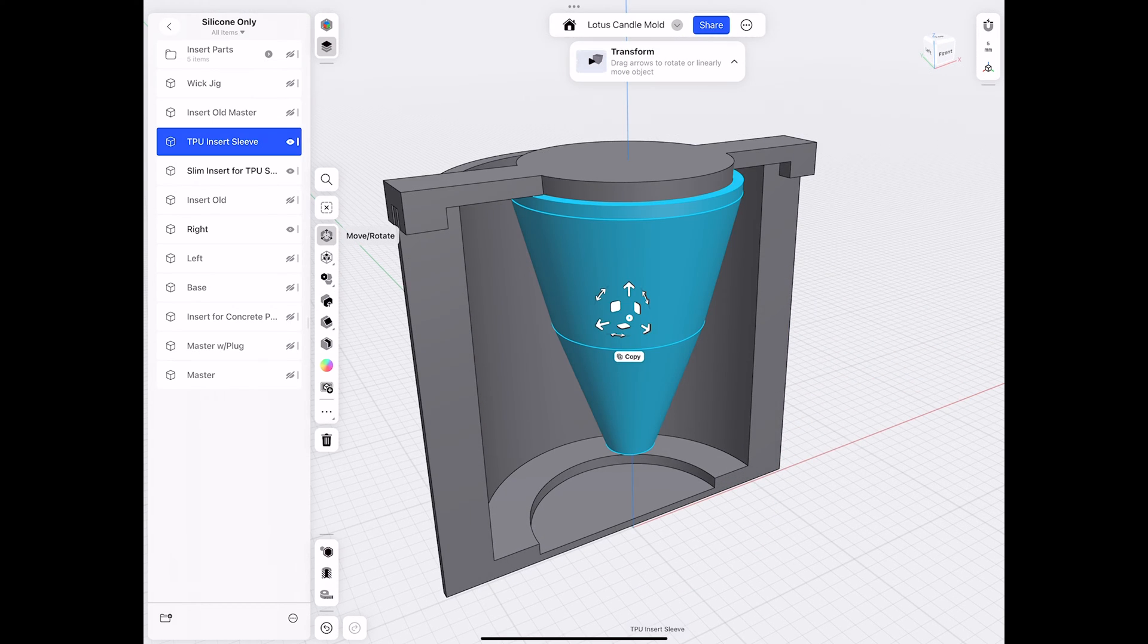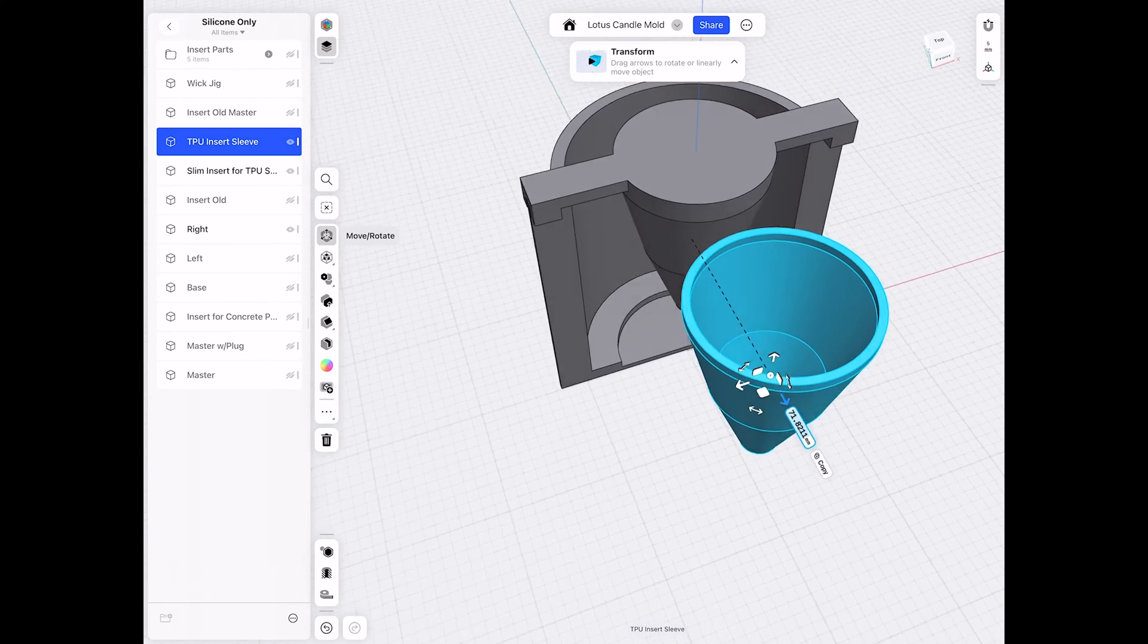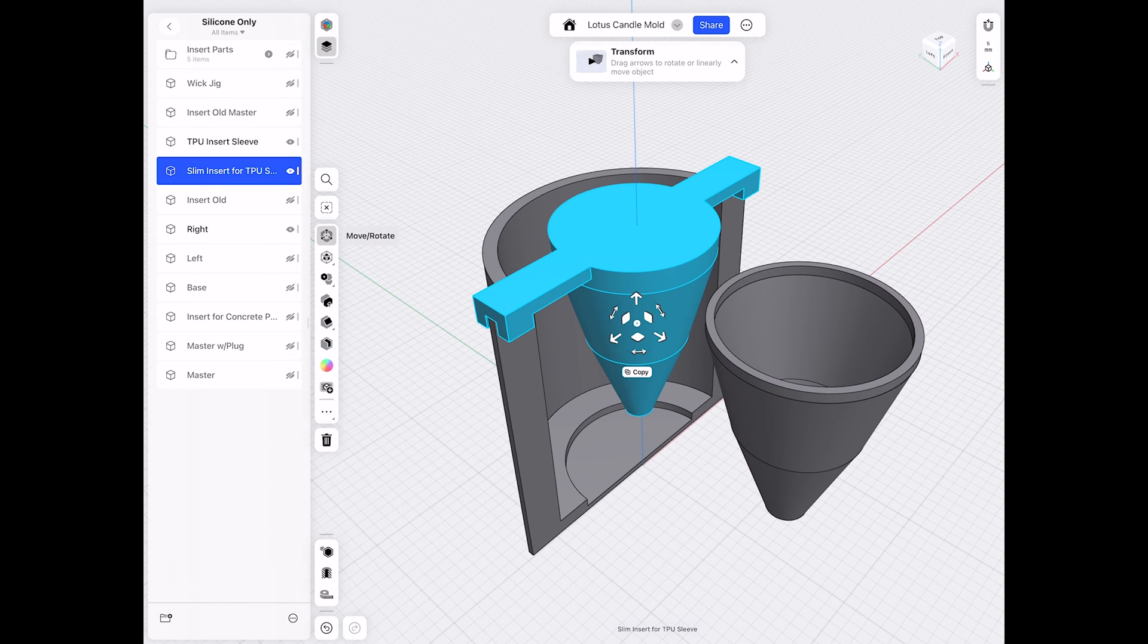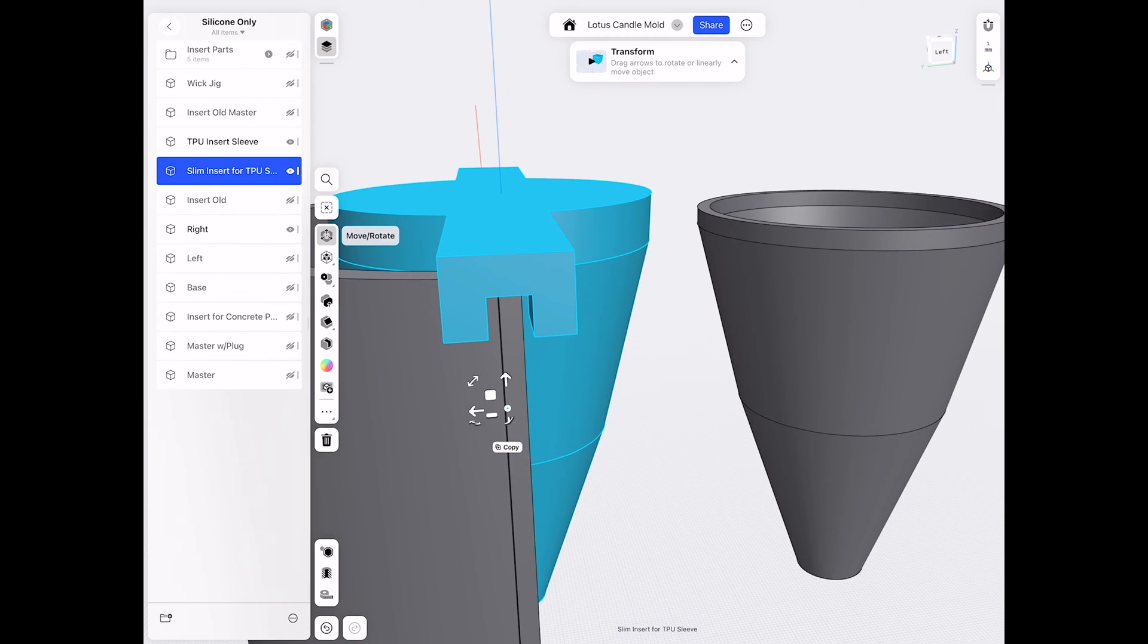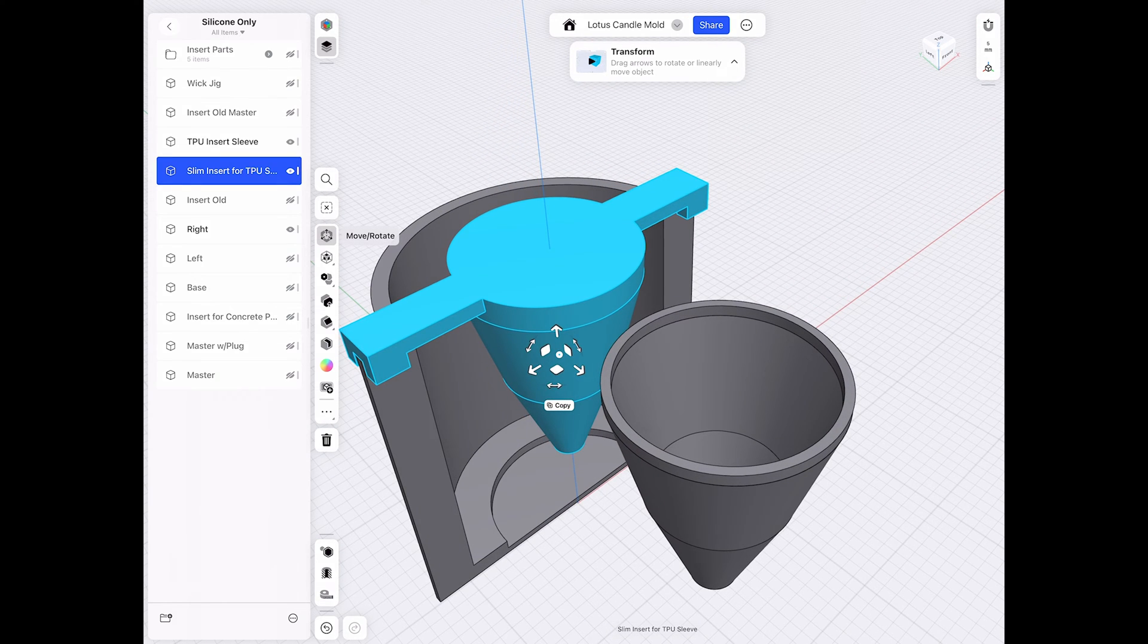And then I have an inside core, which I make out of TPU, which is like squishy rubber. Because you'll see when I'm pulling it apart, it's very difficult to get that piece out. And then this last piece makes sure that the inner core has structure to it.